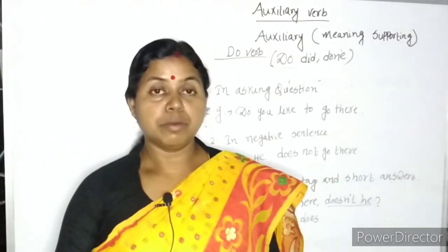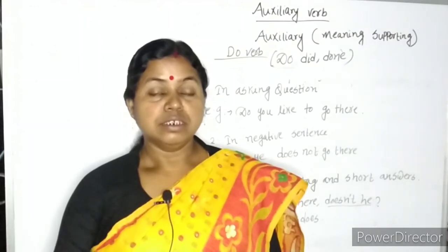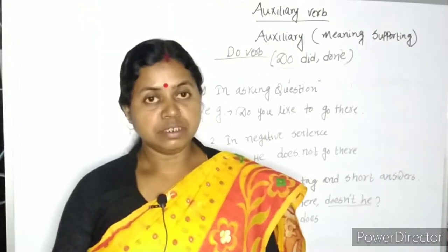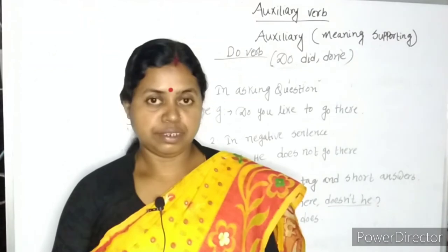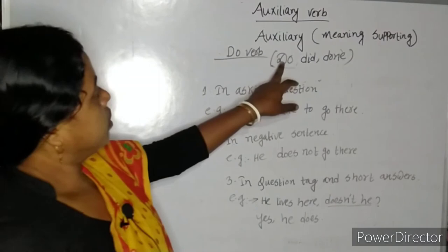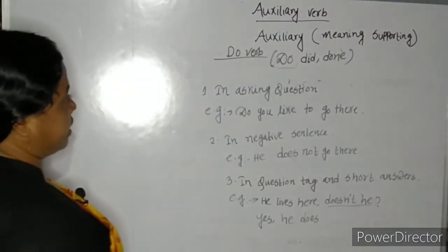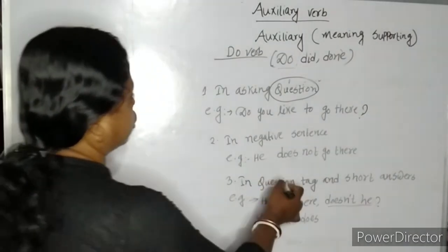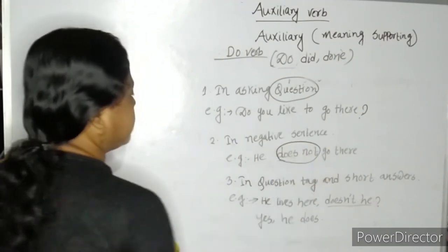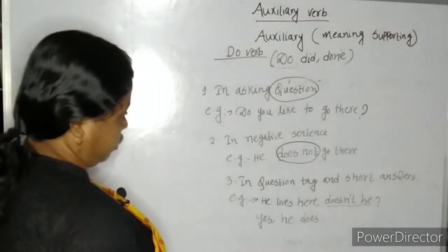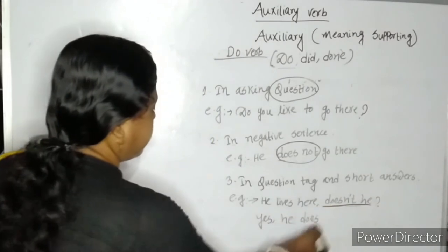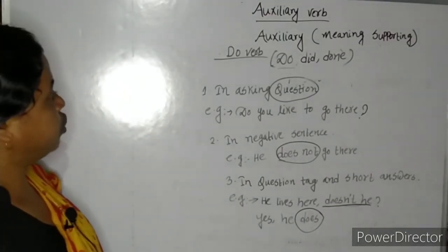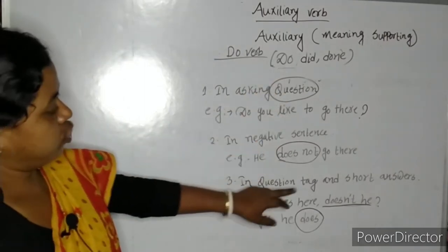Here I am going to discuss about the use of do verb. Do has its forms: do, does, did. It is used in asking questions — do you like to go there? — in forming negative sentences — he does not go there — in question tags — does he not? — and in short answers — yes, he does. So do verb is mainly used in asking questions, forming negative sentences, question tags, and short answers.